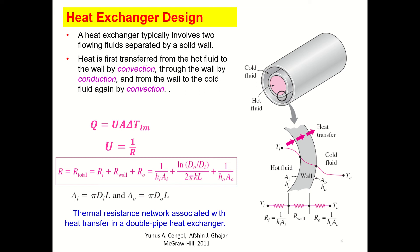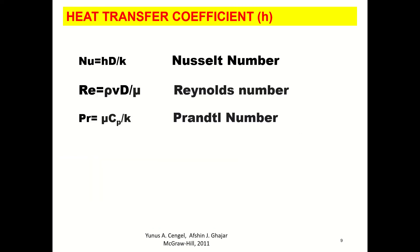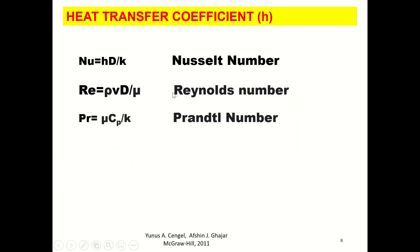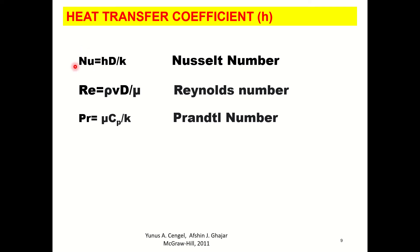The question is how to find h_o and h_i. We use dimensionless numbers to calculate h_i and h_o. This is the Nusselt number, given as Nu = h·D/k, where h is the heat transfer coefficient, D is the diameter, and k is the thermal conductivity. We find the Nusselt number, and since we normally know the diameter and thermal conductivity of the fluid, we can determine the heat transfer coefficient inside and outside the tube.